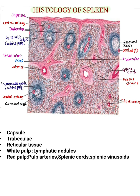Hi everyone, in this video we are going to learn about Histology of Spleen. The spleen is covered by a dense connective tissue capsule. Trabeculae arise from the capsule and extend into the interior of the spleen, consisting of veins and arteries. The spleen is filled with reticular tissue.